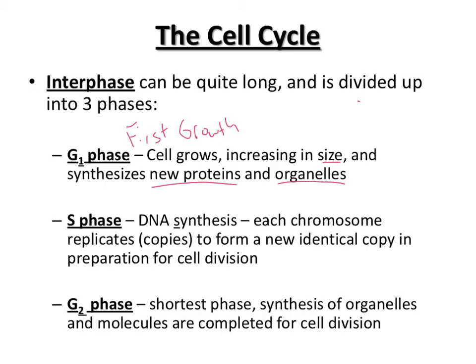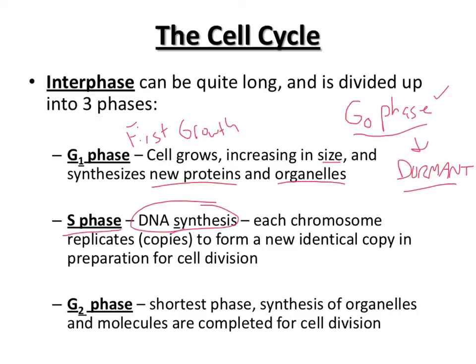Sometimes a cell will also kick into G0 phase, where the cell goes dormant. The cell is still alive but not actively going through the cycle. The majority of adult human cells are in G0 phase — just doing their everyday job but not trying to divide. If the cell is interested in dividing, after G1 it goes to S phase, which stands for synthesis — DNA synthesis — when the chromosomes replicate to allow us to move toward cell division.